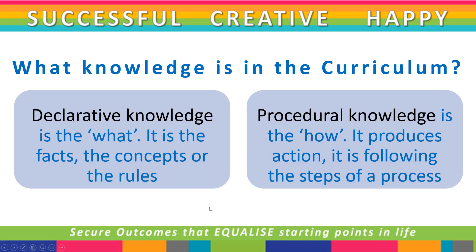So what knowledge is in the curriculum? Knowledge is what students need to be successful in their academic studies. Knowledge in the curriculum can be broken down into two main types: declarative knowledge and procedural knowledge. Declarative knowledge is the 'what' — it is the facts, the concepts or the rules. Procedural knowledge is the 'how' — it produces some kind of action and involves following the steps of a process. Procedural knowledge can also be conditional, meaning it relies on knowledge that has come before. Another way to think of it is that declarative knowledge is key ideas, and procedural knowledge is using, applying and critiquing them.